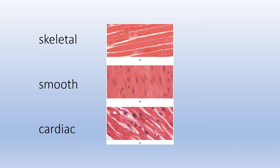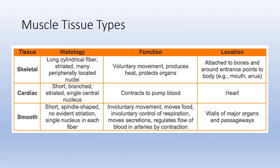Under the microscope, skeletal muscle shows nice parallel lines with faint striping. Smooth muscle has no striping, with dark-colored nuclei visible. Cardiac muscle has branching and striations. A summary table gives information on each muscle type's microscopic appearance, function, and location.